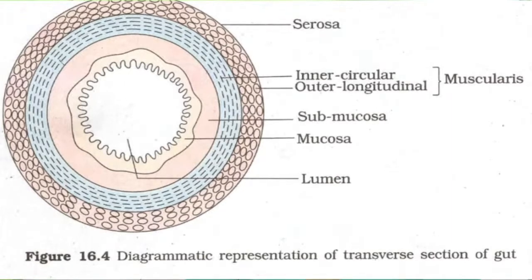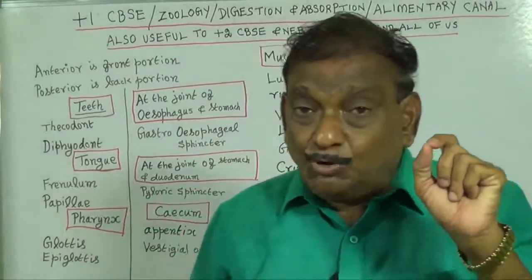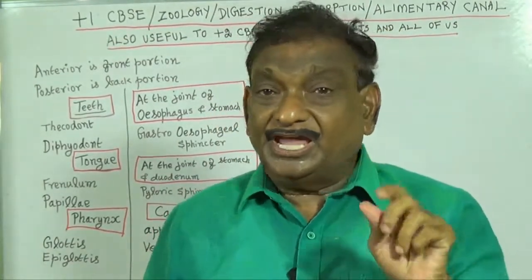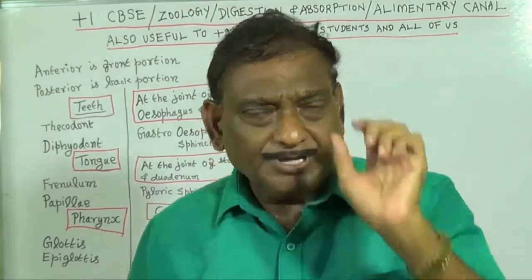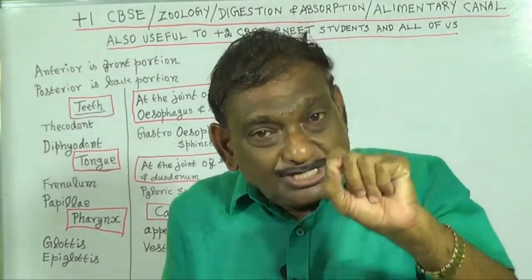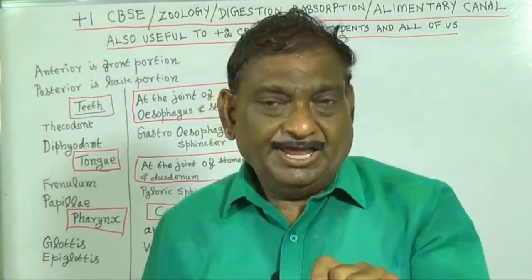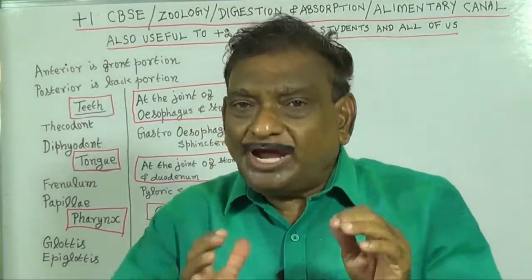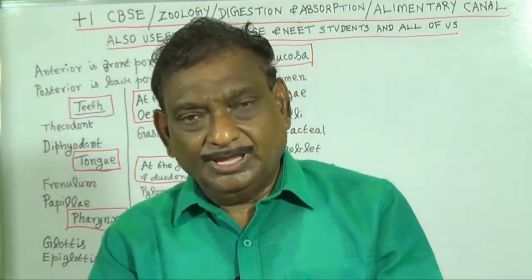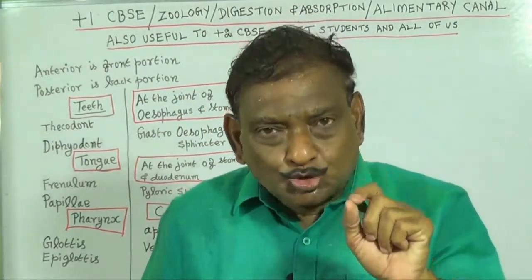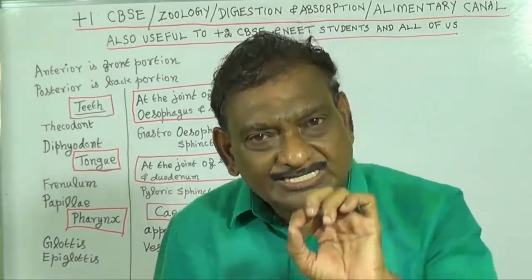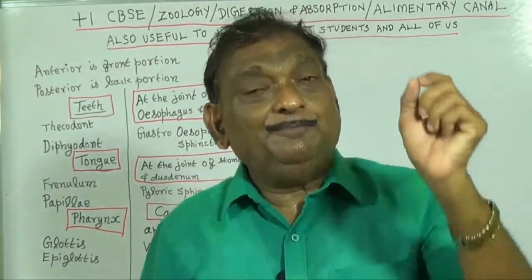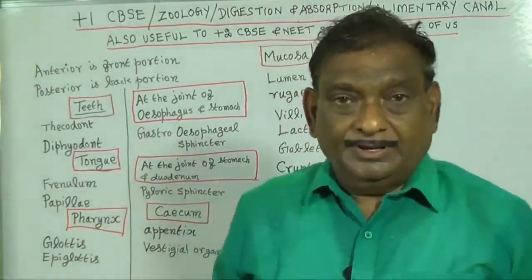The lumen is also seen on the diagram. The outermost layer, serosa, is made up of thin mesothelium and has some connective tissue. Mesothelium cells are monolayer cells — they cover the serous cavities and the internal organs and provide protection. In this context, it is also useful to know about epithelium cells, which cover the outer surface of organs and blood vessels throughout our body.